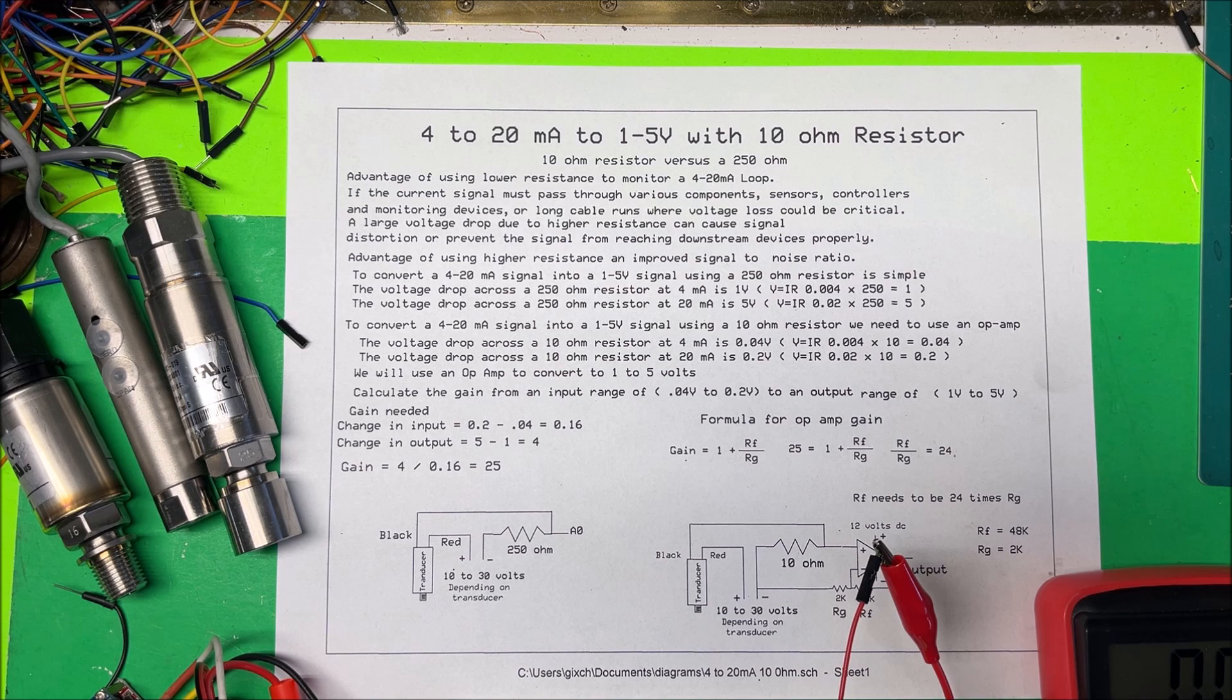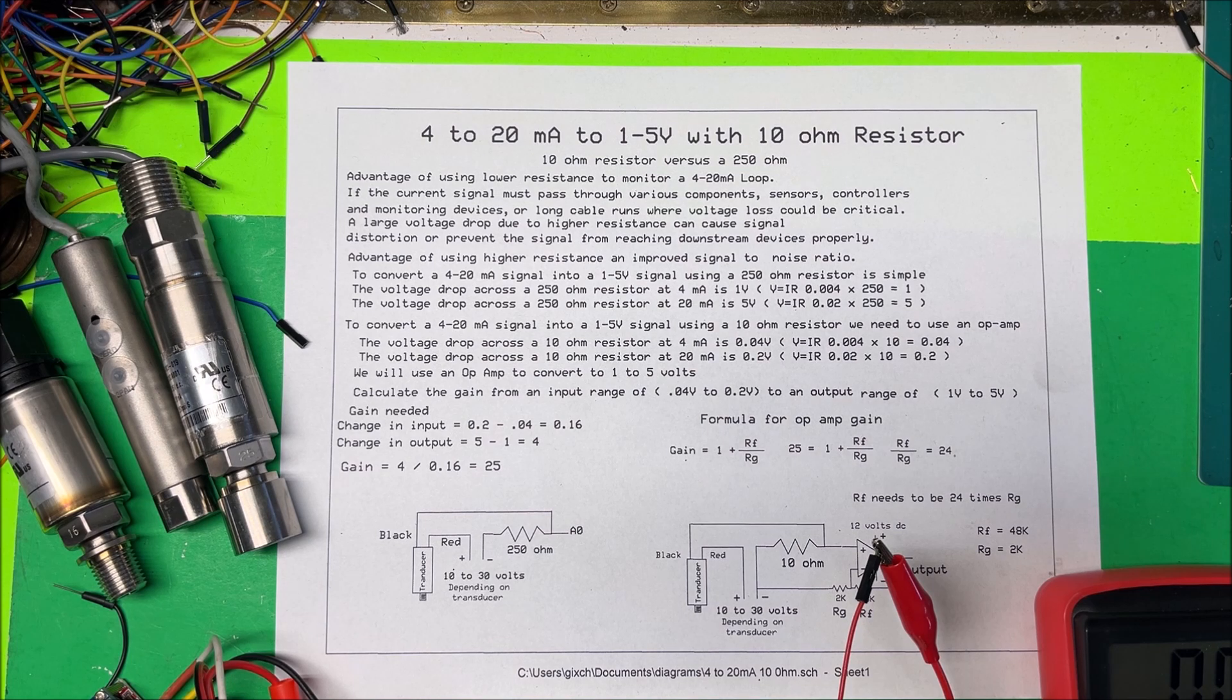Because if you use a 250 ohm resistor, 4 milliamps into 250 ohms gives you 1 volt, and 20 milliamps into 250 ohms gives you 5 volts, so you're all set to go. Here's a diagram to use to do it that way. You've got your transducer here.